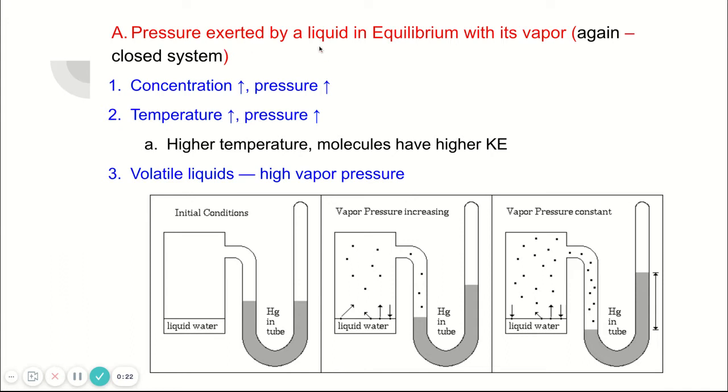Pressure exerted by a liquid in equilibrium with its vapor means that a liquid in a closed system has a pressure. There's a pressure exerted by the liquid and a pressure exerted by the system, so there's two opposing pressures.